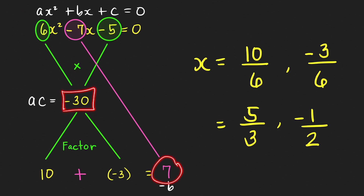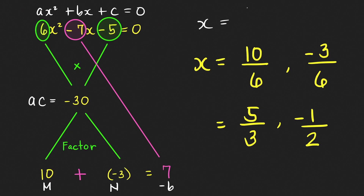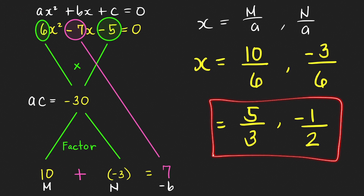The factors of negative 30 whose sum is 7 are 10 and negative 3. After finding these appropriate factors, we label them as m and N. You can already determine the solutions: x equals m over a, where a is the coefficient of your x squared, and n over a. So here we have 10 over 6 and negative 3 over 6, which simplify to 5 over 3 and negative 1 half.